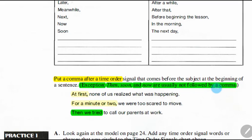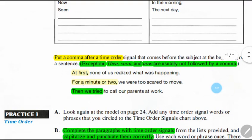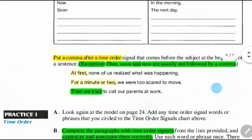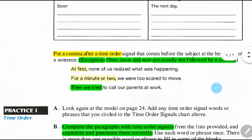When we have then, soon, or now, we should not use a comma. For example: 'At first, none of us realized what was happening for a minute or two' — comma after 'at first' because it is a time order signal. But with 'then' there is no comma, because then is an exception. This is an important point: put a comma after time order signals, but not after then, soon, or now.